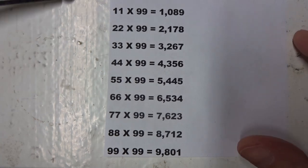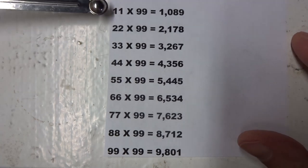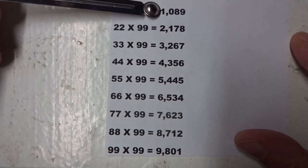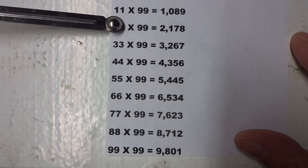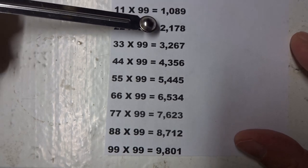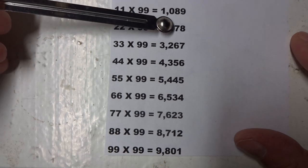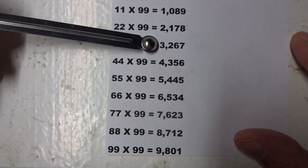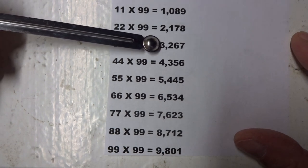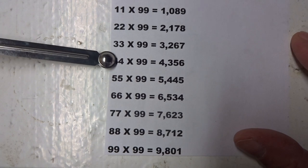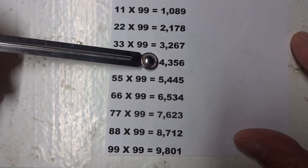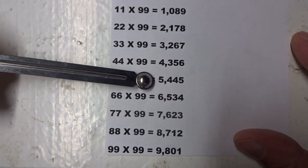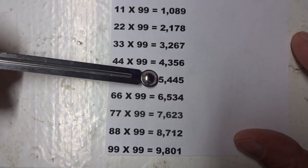Here are some numbers that are multiplied to provide the answer. Eleven times ninety-nine equals one thousand eighty-nine. Twenty-two times ninety-nine equals two thousand one hundred seventy-eight. Thirty-three times ninety-nine equals three thousand two hundred sixty-seven. Forty-four times ninety-nine equals four thousand three hundred fifty-six. Fifty-five times ninety-nine equals five thousand four hundred forty-five.